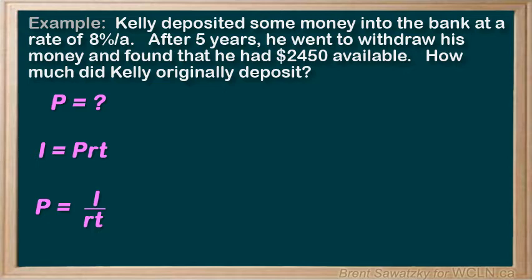Well, let's problem solve. We know that the total amount, our $2,450, is a combination of principal and interest. So let's write that down: P plus I equals A, where A is our total amount, that is $2,450.